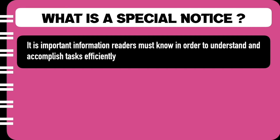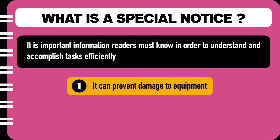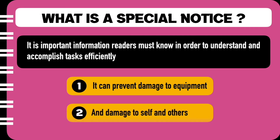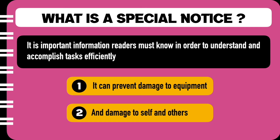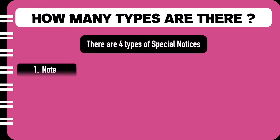Special notices have two purposes. The first is to prevent damage to the equipment, and the second purpose is to prevent damage to self and to others. So how many different notices are there? Basically, there are four of them.